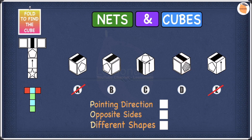Out of the five options we started with, we managed to cross off two — A and E — and we're left with B, C, and D. We can put a tick next to pointing direction and now let's move to opposite sides.